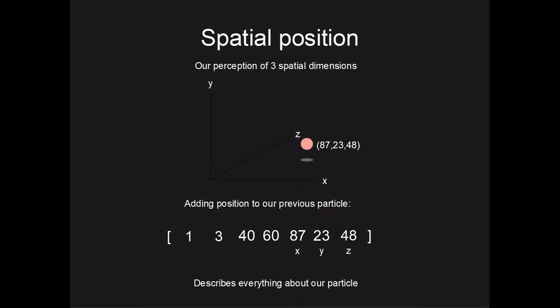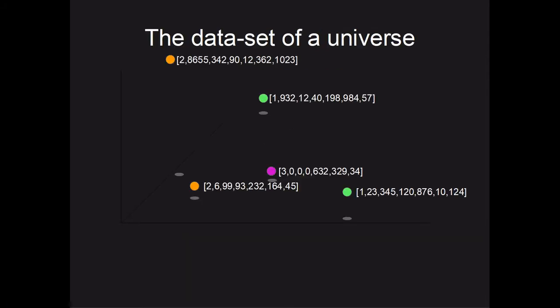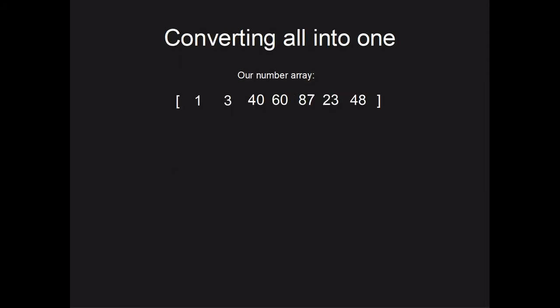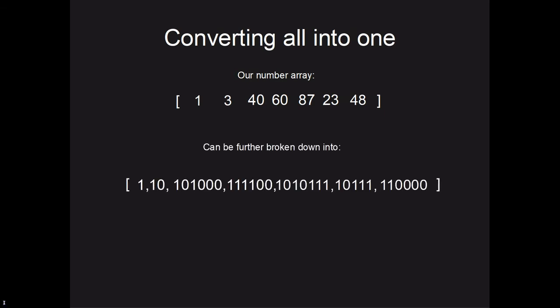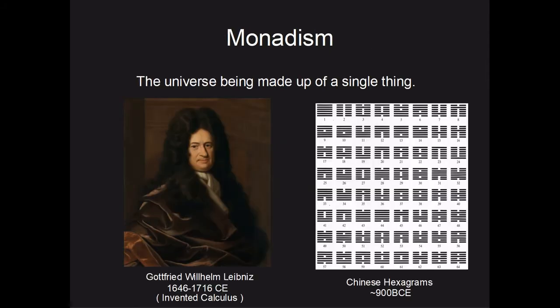If we do this for every single particle in our universe, we have a snapshot of what the universe looks like at that specific moment in time. You can convert this massive set of arrays of numbers into binary, which means the universe is really made up of just one thing — one and not one. This way of thinking was quite popular in the Renaissance and was called monadism, meaning made up of one thing. Gottfried Wilhelm Leibniz was a big advocate for this and was one of the first western people to actually use binary, which he based off ancient Chinese characters called hexagrams that accurately represent binary numbers.